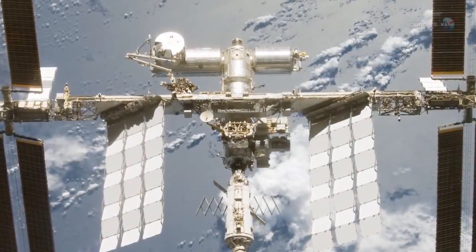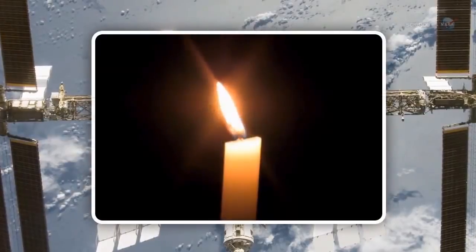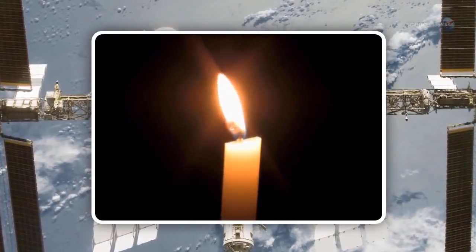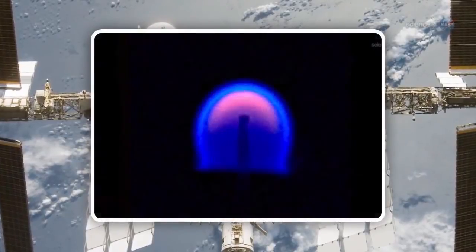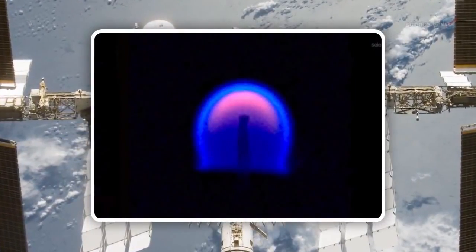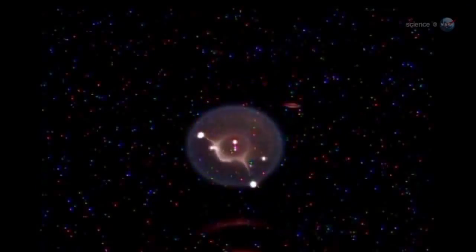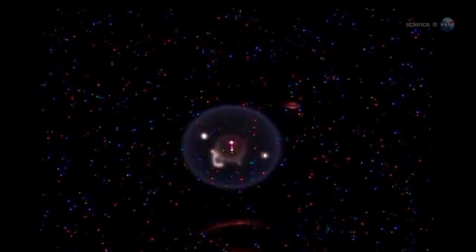Nowhere is this more true than onboard a spaceship. Unlike flames on Earth, which have a teardrop shape caused by buoyant air rising in a gravitational field, flames in space curl themselves into tiny balls. Untethered by gravity, they flit around as if they have minds of their own.